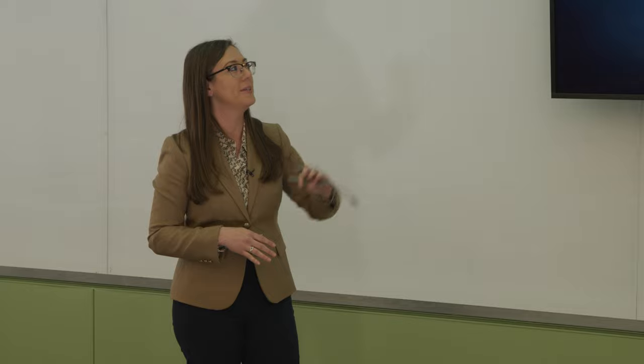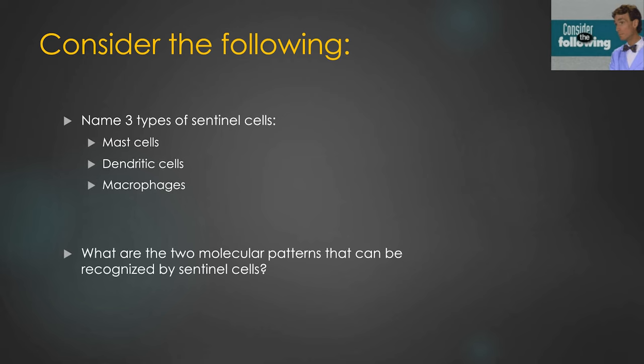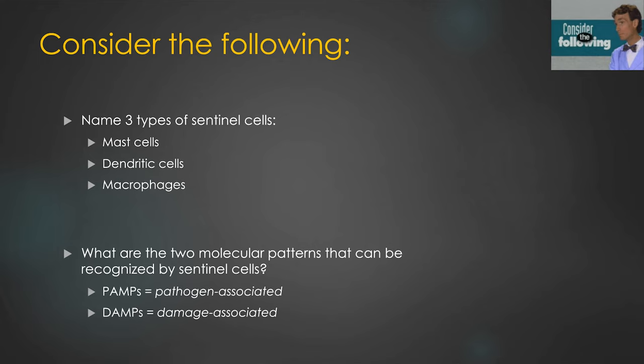Let's do a check-in on what we've covered. The three types of sentinel cells surveying the land are mast cells, dendritic cells, and macrophages. The two broad molecular patterns recognized by those sentinel cells are PAMPs — pathogen-associated molecular patterns — and DAMPs — damage-associated molecular patterns. So we're either looking for pathogens or some sort of cell damage.